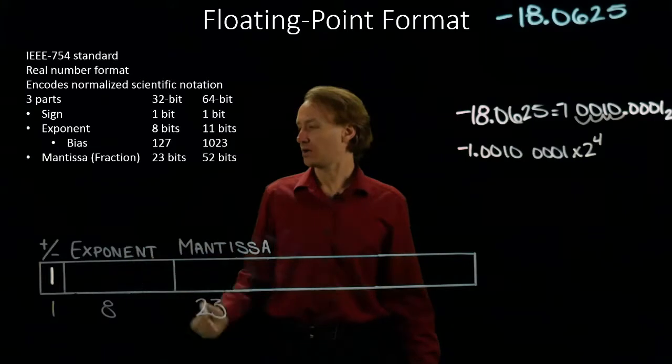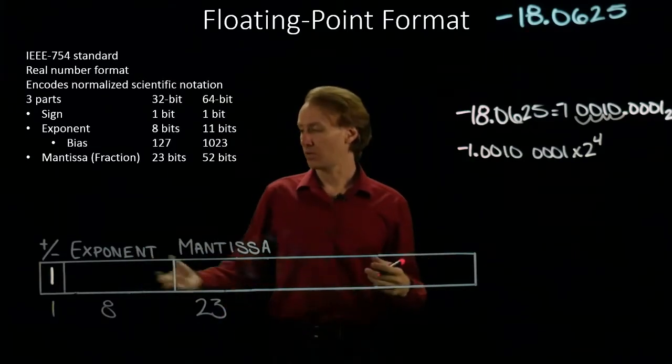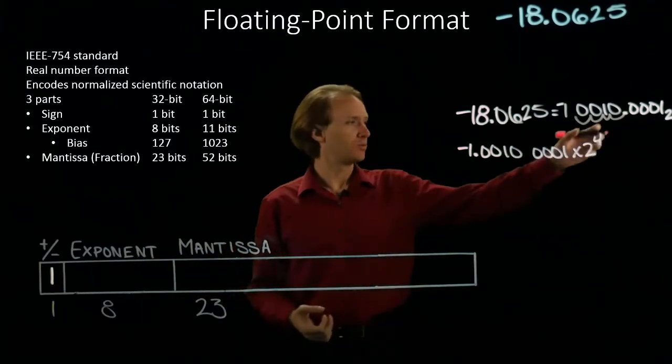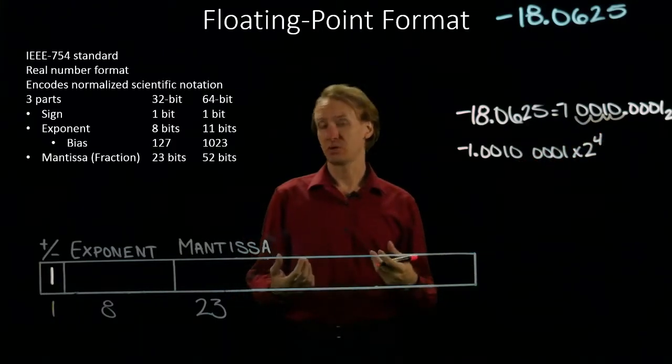So I've got my sign bit. It was a negative. Next I want my exponent. So my exponent here is 4, but I need to add my bias of 127.